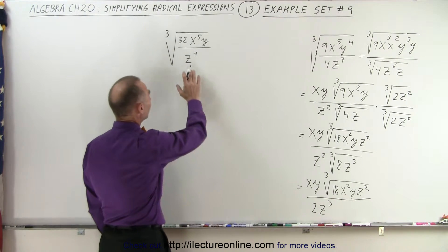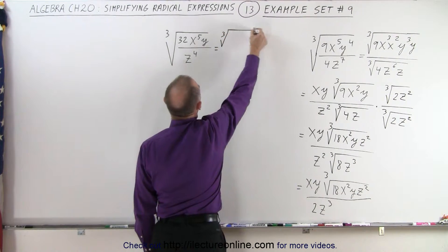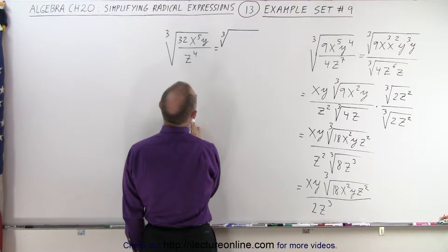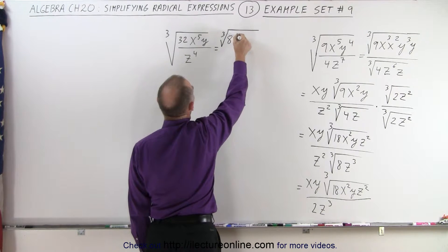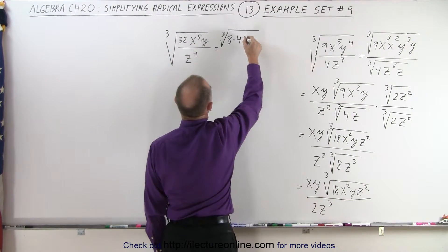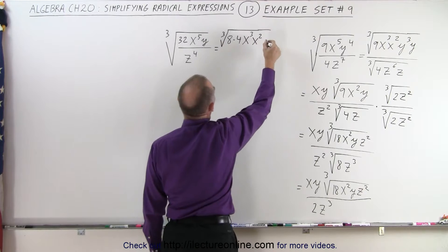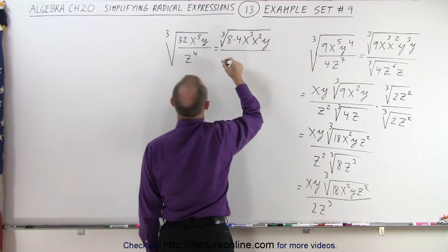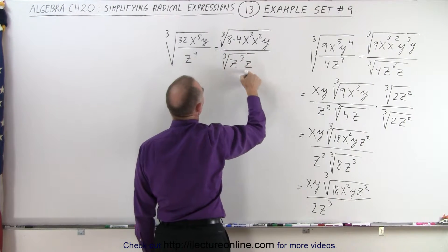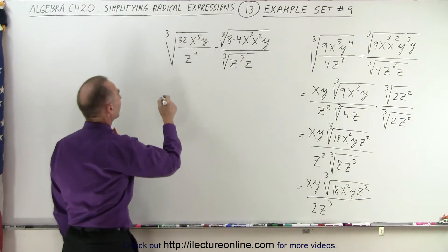Let's try it again on this example. I can write this as the cube root of — notice 32 can be written as 8 times 4, because 8 times 4 is 32, and I can take the cube root of 8, which is equal to 2. Then I can also write x cubed and x to the second power. When I multiply, I get x to the fifth back, and I have a y. All divided by, in the denominator, the cube root of z cubed times z. And when I multiply, I get z to the fourth back.